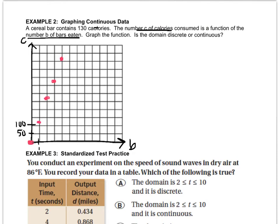Before I do anything, I need to decide whether or not I'm allowed to connect it. Well, can you eat half a cereal bar? Can you have 105 calories? If you really wanted to eat half a bar, you absolutely could. So because I can have those fractional amounts, I'm going to connect it and extend it. In this case, the domain is continuous.